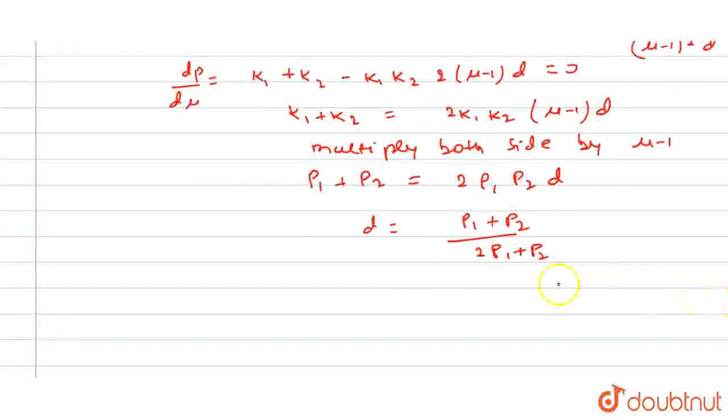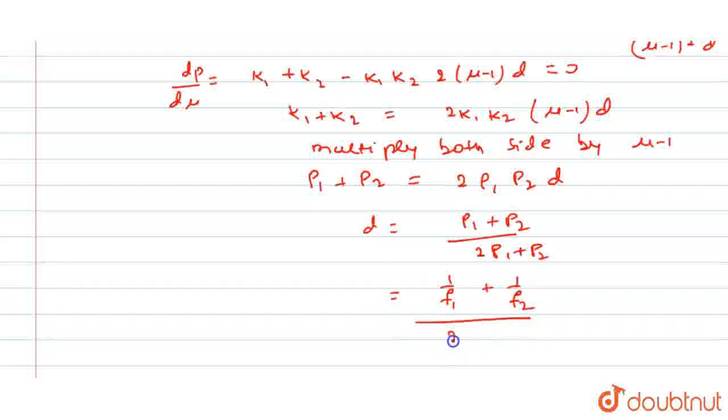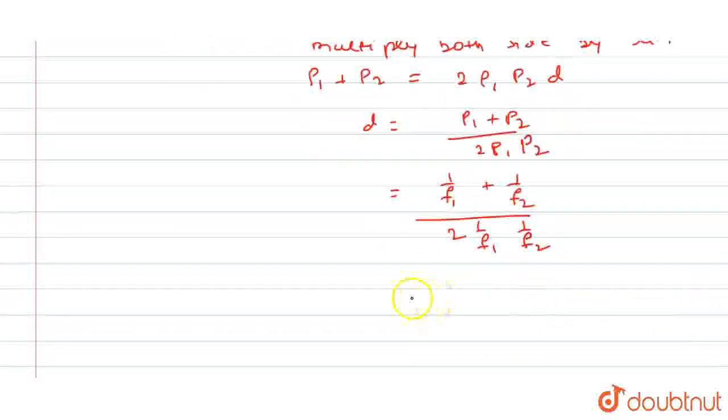We know power equals 1 by f. So p1 is 1 by f1, p2 is 1 by f2, divided by 2. So p1 becomes 1 by f1, 1 by f1. This will simply become p1 into p2, 2 p1 p2. So 1 by f1, 1 by f2.